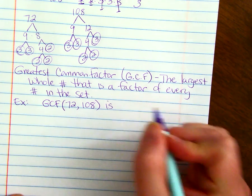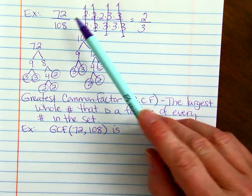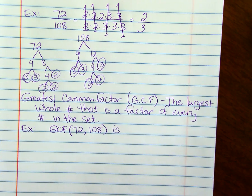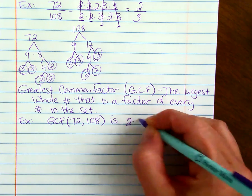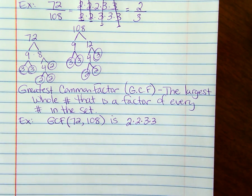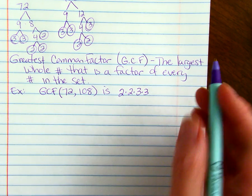Since we've already found the prime factors of those, we could come up here and say, which ones did we cross out? We crossed out two 2's and two 3's. So if you just multiply those together, if we just took our two 2's and our two 3's and multiply them together, we would get 4 times 9, or 36.